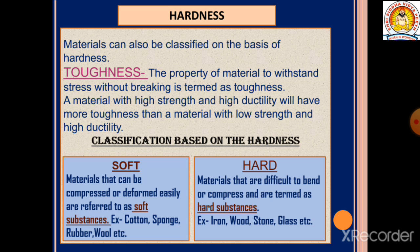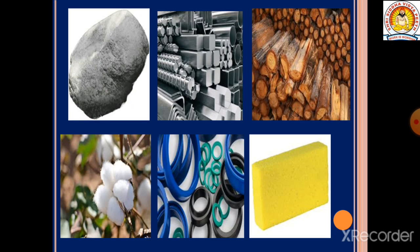Hard materials are those that are difficult to bend or compress, and are termed as hard substances. Examples include iron, stone, and glass. Here you can see pictures of stone, iron, and wood — these are hard substances we cannot compress. Cotton, rubber, and sponge are very soft and can be compressed and deformed easily.